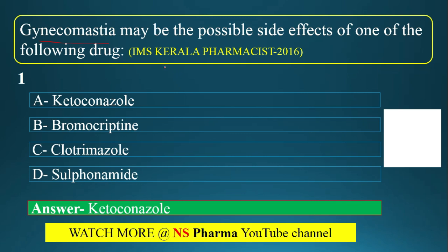You can study this using the mnemonic KETODISCO. Keto represents ketoconazole. D represents digoxin.